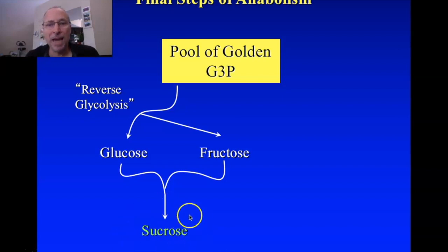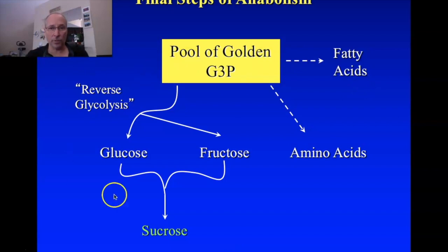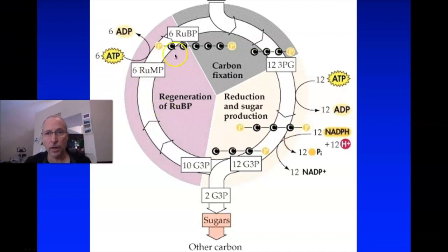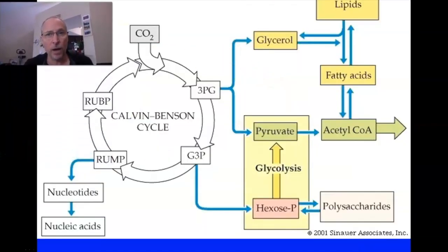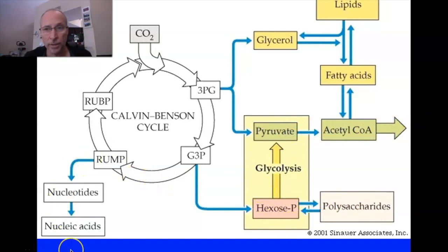That's not the only thing plants can make. The pool of golden G3P can be used to make amino acids, out of which proteins are made. It can make fatty acids and glycerol molecules to make triglycerides or phospholipids. From G3P you can make all the different things — all the lipids, feed into the Krebs cycle, make all sugars, all nucleotides and nucleic acids. Everything comes from that G3P. This is an excellent place to end the class.